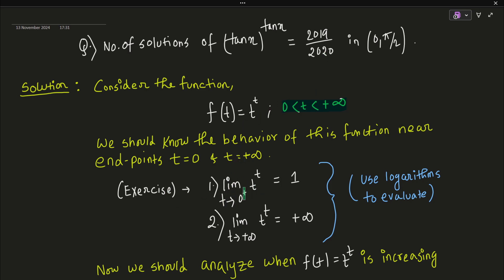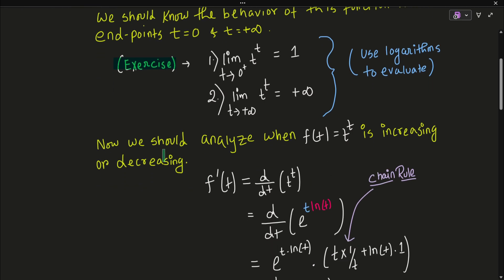The limit of t^t as t approaches 0 is 1, and as t goes to infinity the limit diverges to infinity. This is left as an exercise — a simple hint is to use logarithms to evaluate these limits. Knowing these endpoint values is essential for analyzing the function.